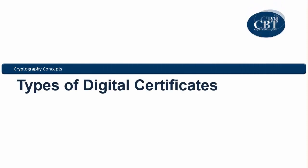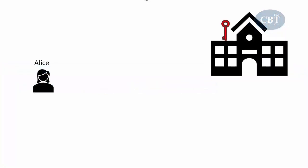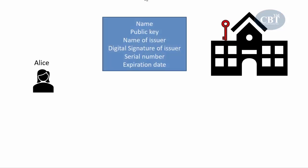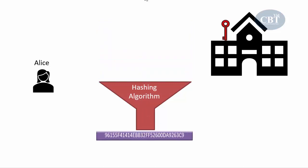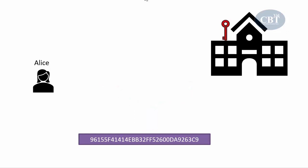Let's take a look at the types of digital certificates that we have. When Alex wants to receive a digital certificate, she has to provide some information to the certification authority and identify herself. The certification authority receives all the information they need, including the public key, sends it through a hashing algorithm to generate a hash file, then uses their private key to sign that hash file. Once signed, they put that information in the digital certificate and send it to the requester.